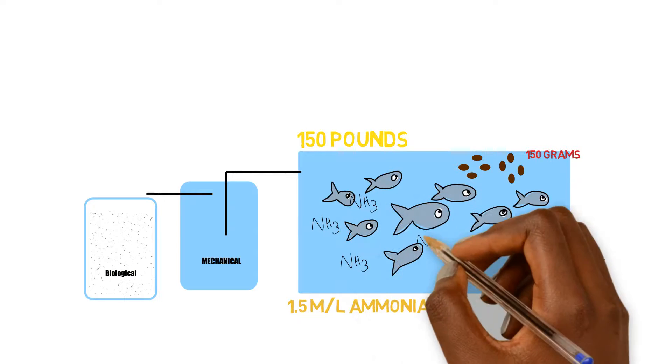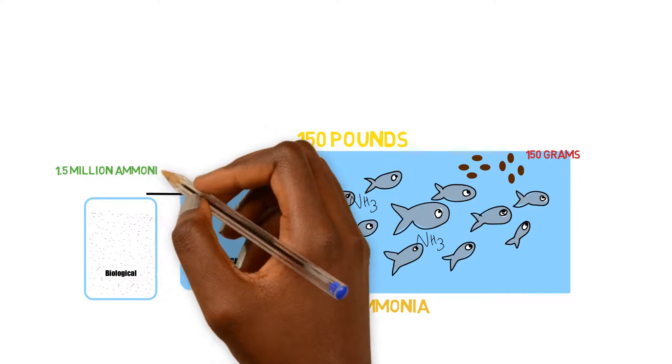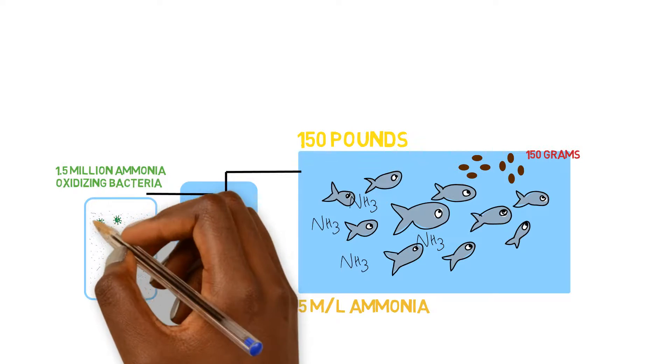And from that 1.5 milliliters of ammonia, let's say for an example, this is a rough estimate again, we get 1.5 million ammonia oxidizing bacteria that are going to live on the biological surface area.